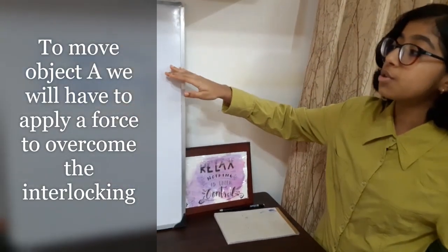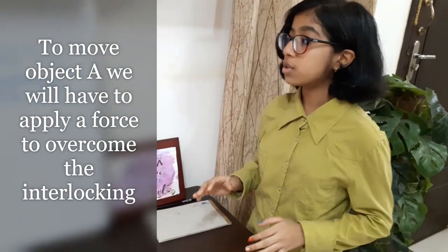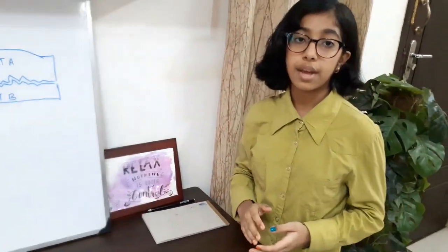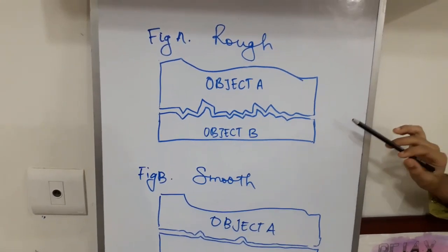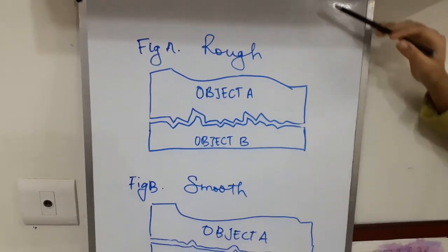If we want to move object A, then we have to apply force to overcome this interlocking. On rough surfaces, there are large number of irregularities, so the force of friction is high.